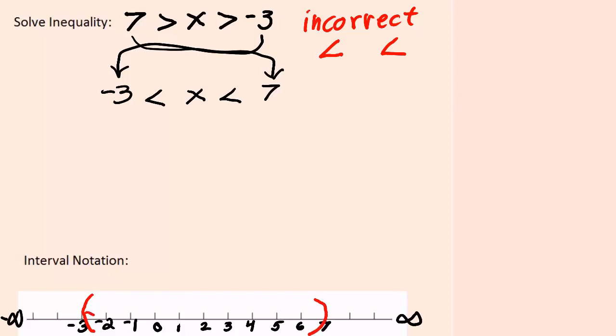So we draw our parentheses around negative three and seven and we connect the two with a line.